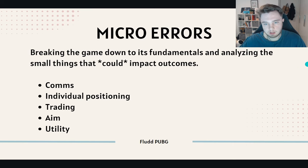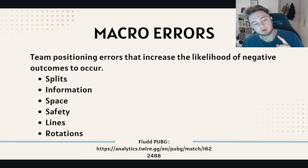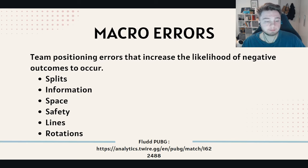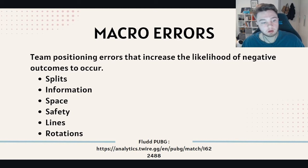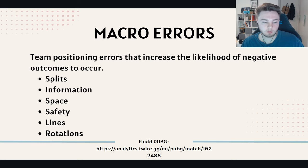Macro errors are team positioning errors that increase the likelihood of negative outcomes. When we talk about macro, we think about: how good were our splits — were they defendable, close enough to regroup, safe to regroup from? What type of information do we have access to, and just as importantly, what information do we give out to opposing teams? What type of space do we have — do we have 360 cover? What lines do we have? Lines are essentially positions that lead to other positions we can fight through. And did we rotate in a way that allowed us to get into positions safely?